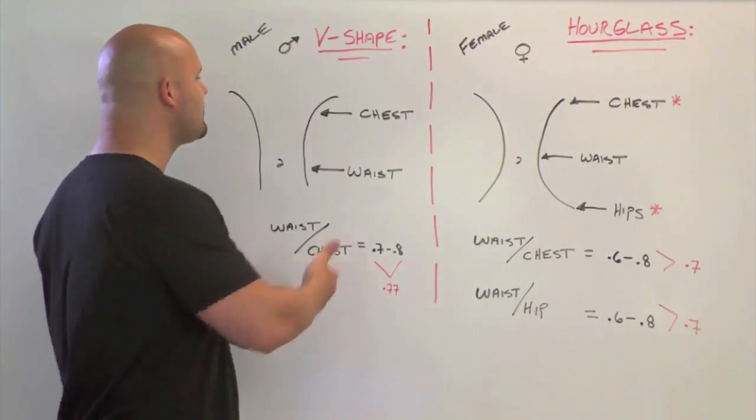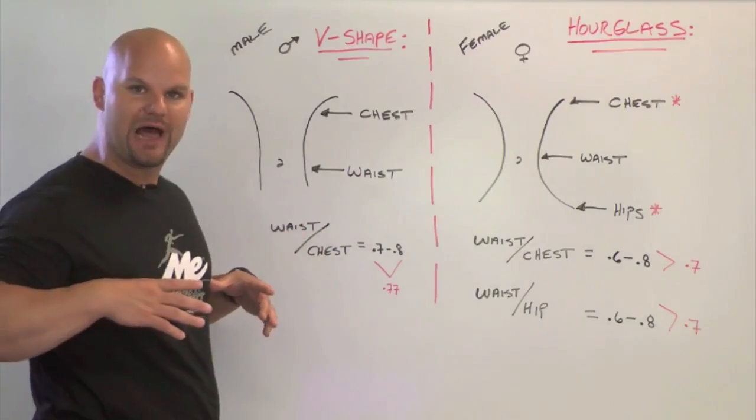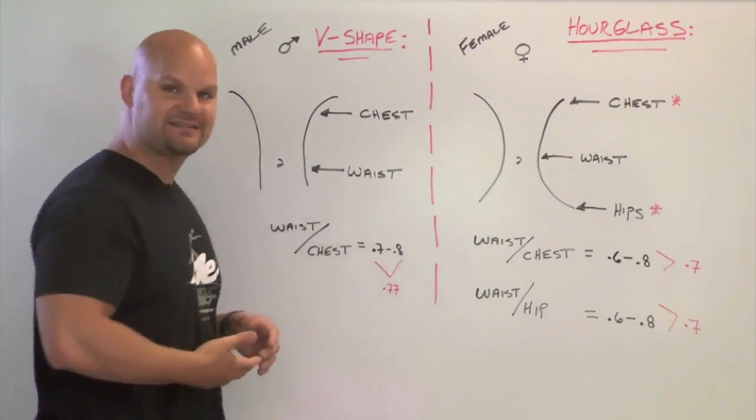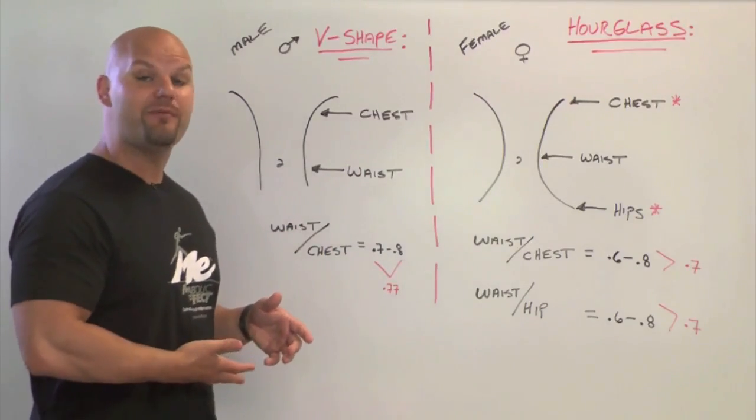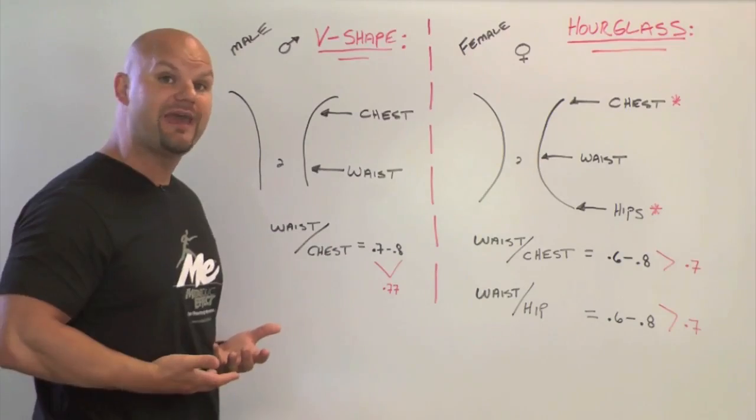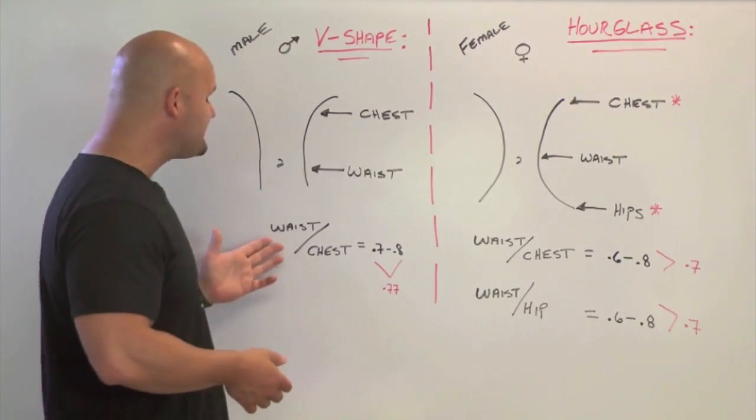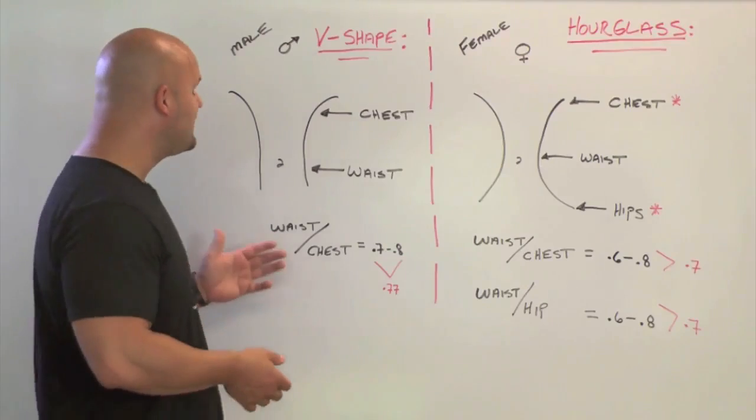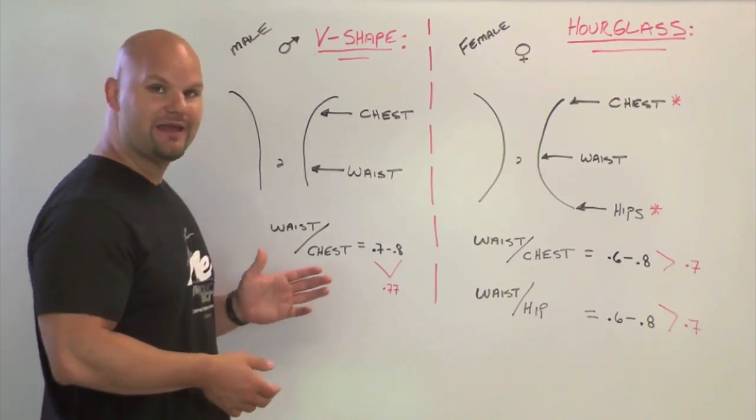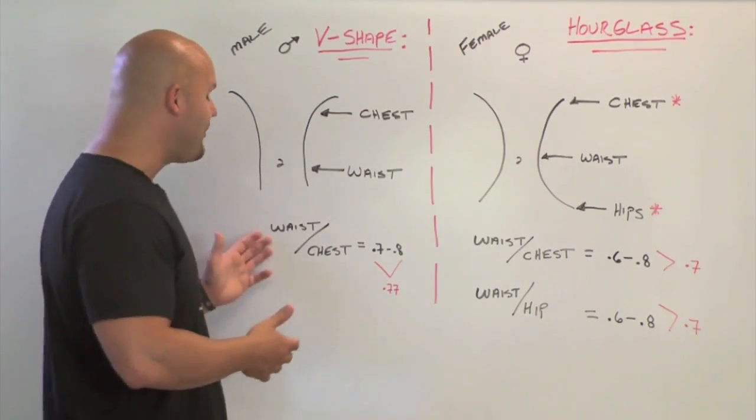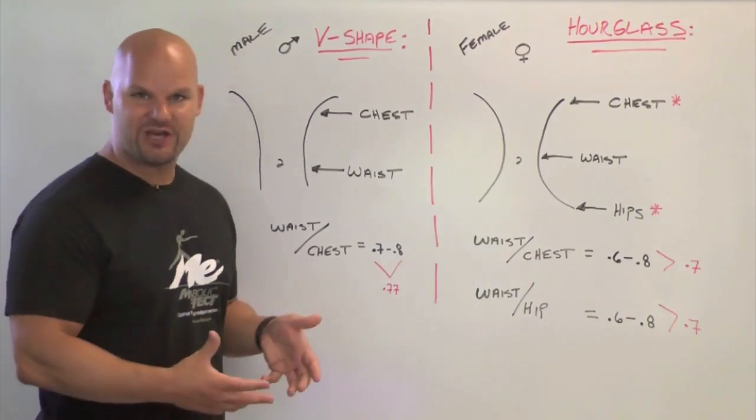What you're going to do is measure chest across the nipple line and measure your waist. Where do you measure your waist? Above the belly button but below the rib cage at the smallest portion. You're then going to take your waist measurement and divide it by your chest measurement to get a waist to chest ratio.